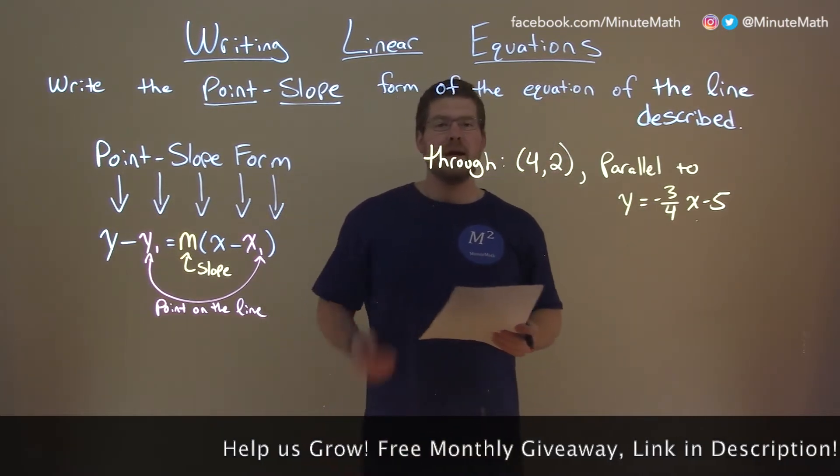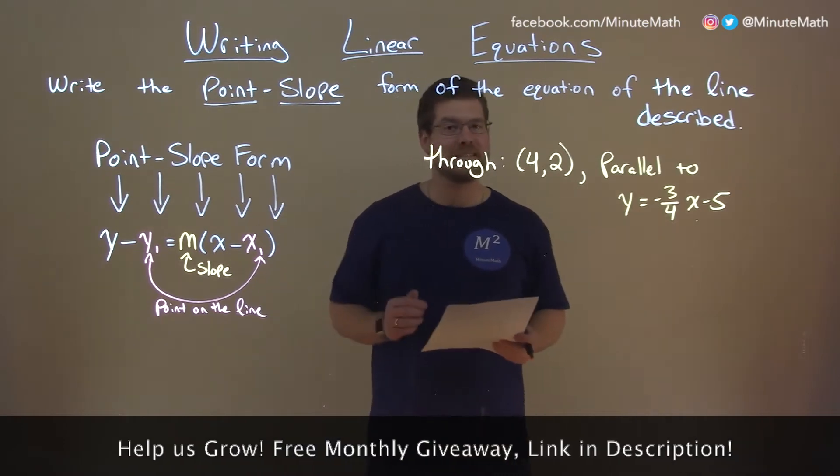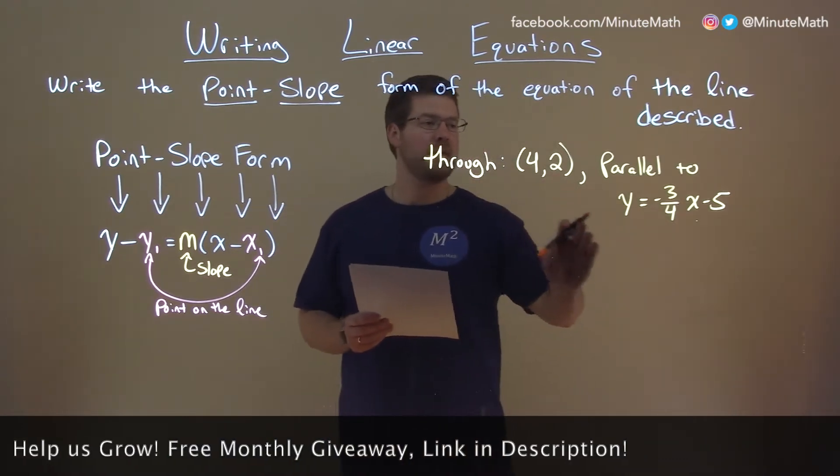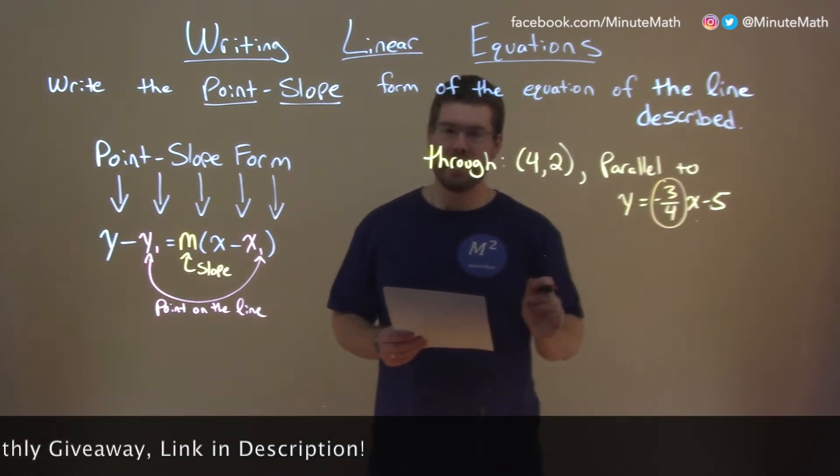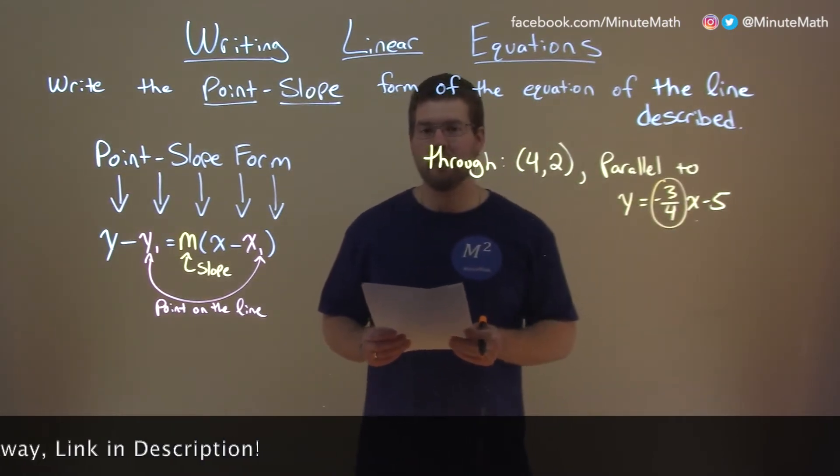Well point slope form has a point and a slope hence the name. So we have a point here and we need to find something that's parallel to this line. So what we care about here is the slope of that line which is negative three-fourths.